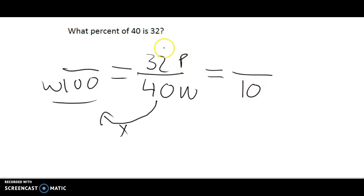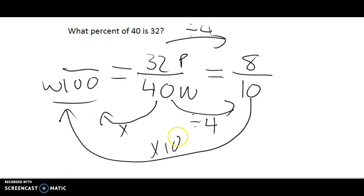So now I have to ask myself, 40 times what is 100? Again, I don't want to make my life complicated, so I'm going to make this a little bit simpler. I'm going to divide top and bottom here by 4. So 40 divided by 4 is giving me 10.